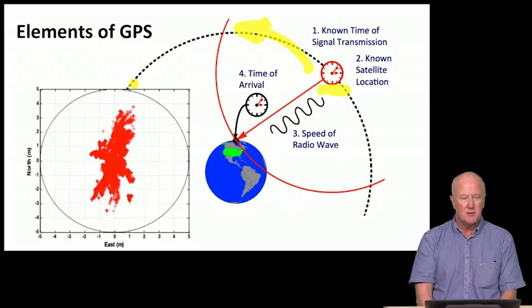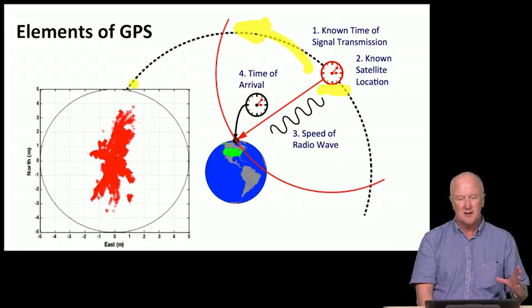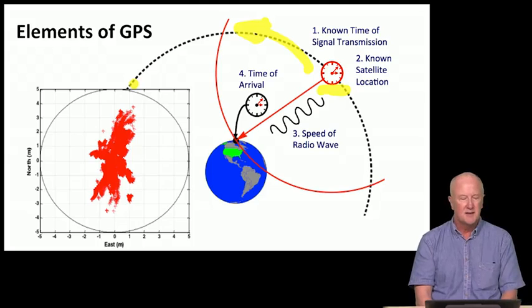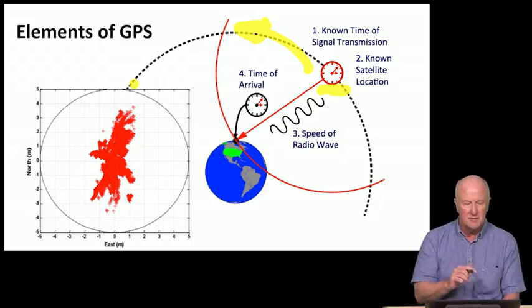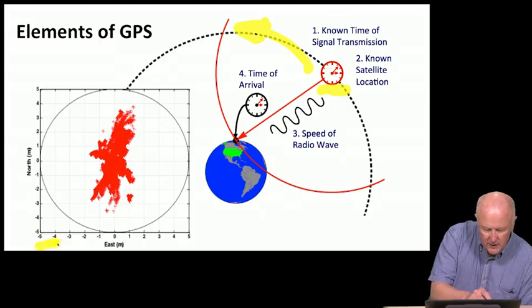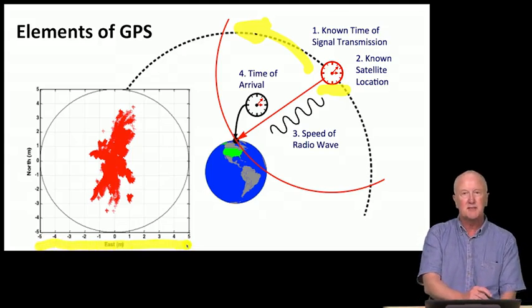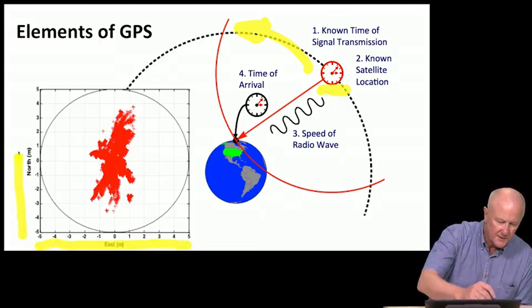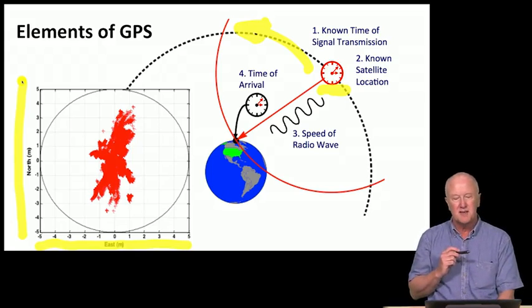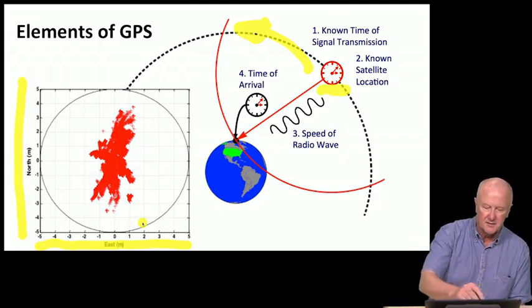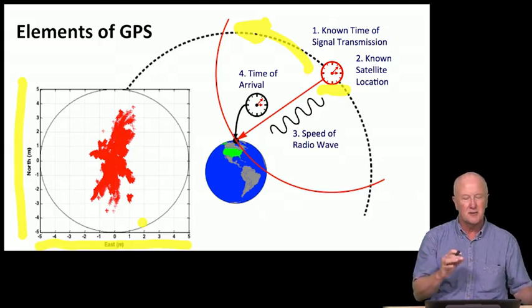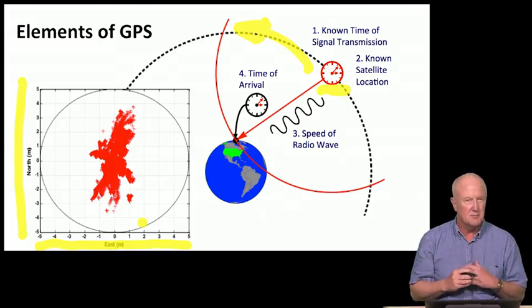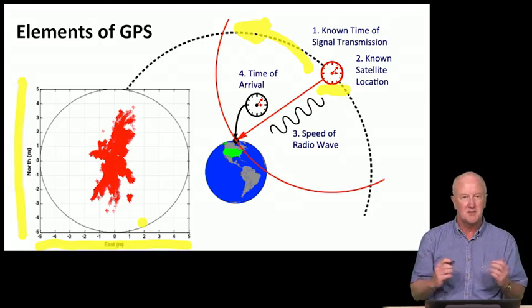So when all that goes well, the accuracy you get is shown on the left side of the plot. And that scatter, that red omelet sitting there, is really just a report on many location estimates made by the receiver. And if you look closely along the horizontal axis, that's plus or minus five meters. And if you look at the vertical axis, that's also plus or minus five meters. And so this circle drawn here is a circle with radius equal to five, and the entire scatter resides inside of there. And that's the nominal typical performance of GPS in the so-called standalone mode.